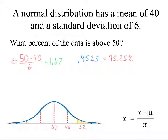But, like I said earlier, this is a small percent. So, it's not 95.25%, it's the other side of this. So, what I have to do is I have to take 100% minus 95.25%. And that would give me what we want, which is 4.75% of the data is above 50. Not very much.